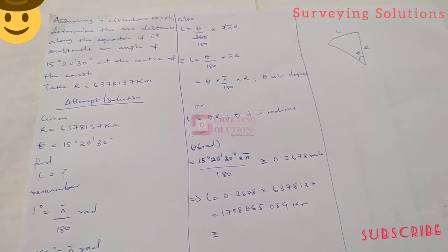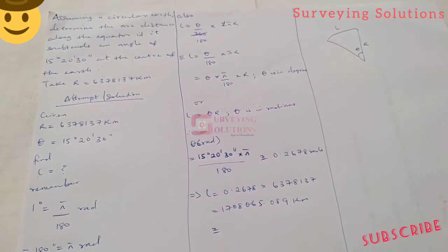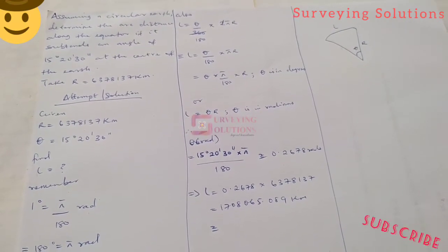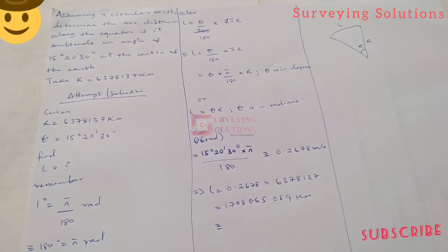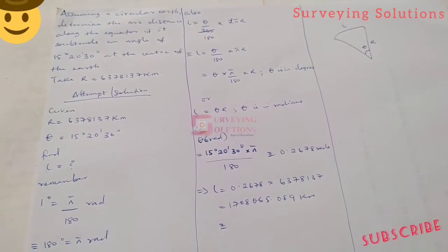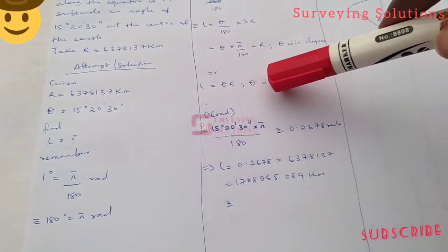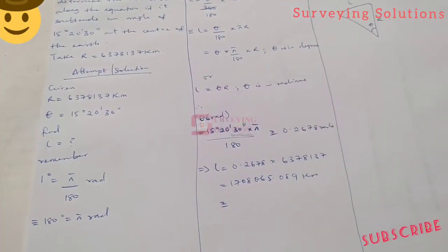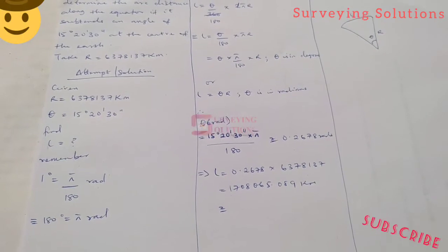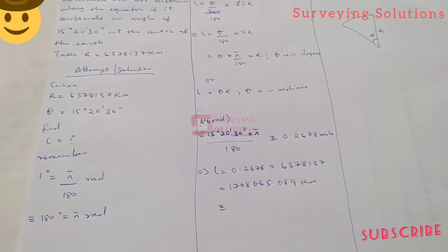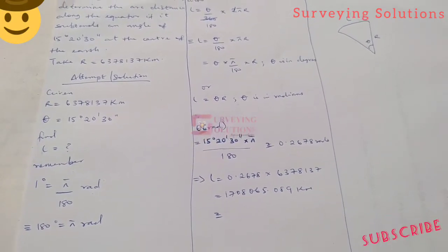Having established our angle in radians, we can now substitute into the formula L equals θ times r, where θ is in radians.